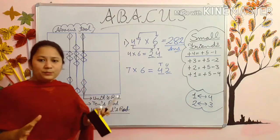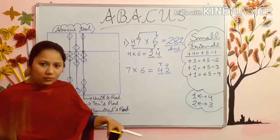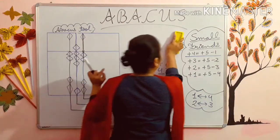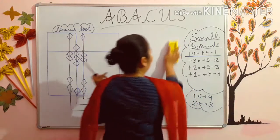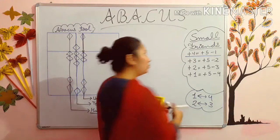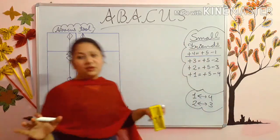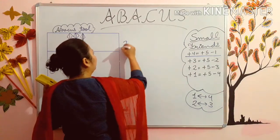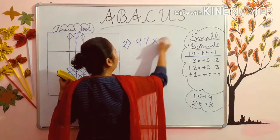I hope students you get this method. We will do some more sums so you will get it more. Kids, if one time you will know how to use the formula, you can do the questions very very fast in the abacus tool. Now our next sum is 97 into 6.